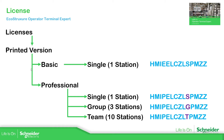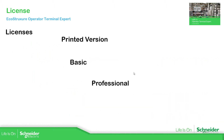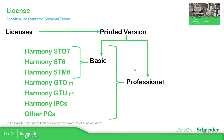Now we have the license — the printed version, the paper one — two different options, and then the digital that we don't commercialize here in the UK at the moment. The main difference between the basic and professional printed versions is that the basic only allows you to program these three models of HMIs, while the professional allows you the complete range.